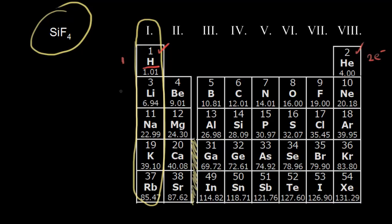When you get to the second period, lithium has one valence electron, beryllium has two, boron has three, carbon has four, nitrogen has five, oxygen has six, fluorine seven, and neon eight. You have more orbitals in the second energy level, so you can fit more electrons — a maximum of eight. This is where the idea of the octet rule comes in. For elements like carbon, nitrogen, oxygen, and fluorine, understanding the octet rule is going to help you when drawing dot structures.